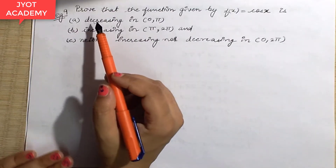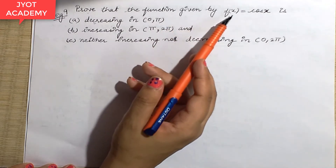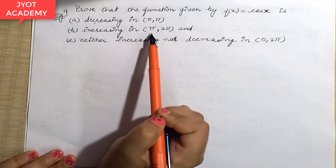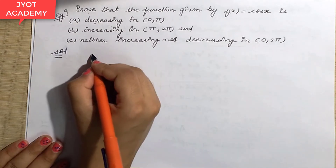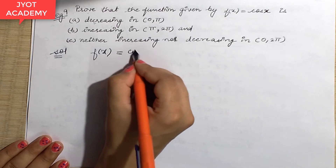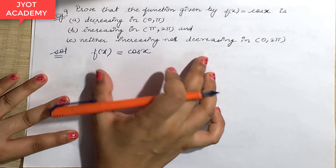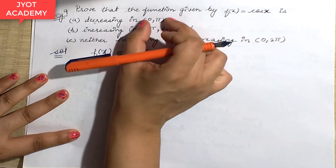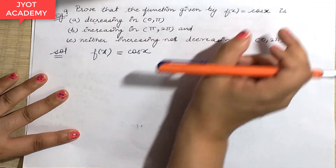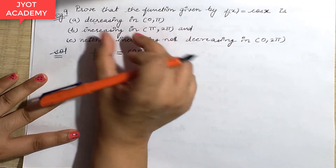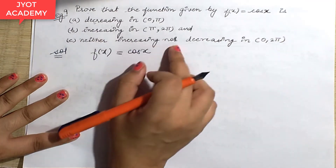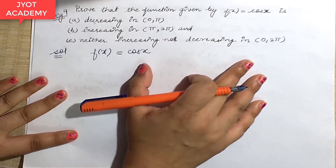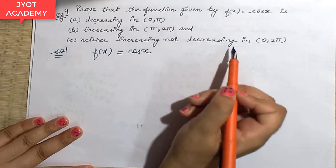Now let's see Example 9. You have to prove that the function f(x) equals cos x is: (a) decreasing in a given interval, (b) increasing in another interval, and (c) neither increasing nor decreasing in a third interval. So the function is cos x, and you have to check each defined range and tell whether it is decreasing, increasing, or neither.